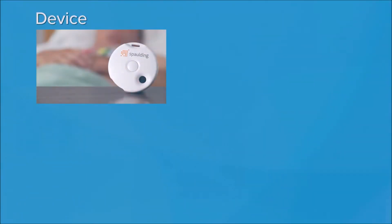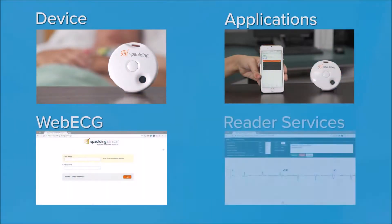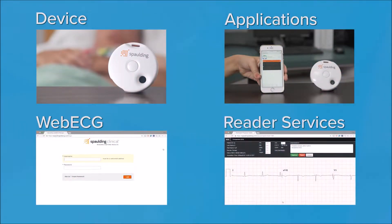There are four building blocks to the Spalding solution: device, apps, web ECG, and reader services. Working seamlessly together, they provide an ECG experience unlike any other.